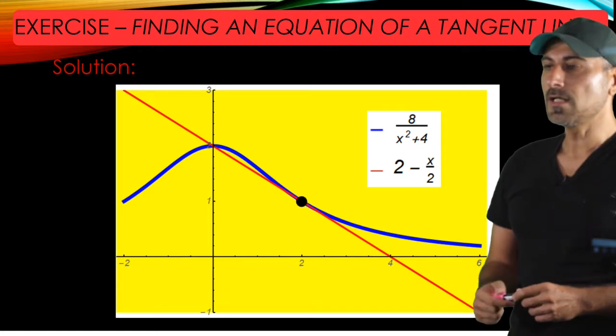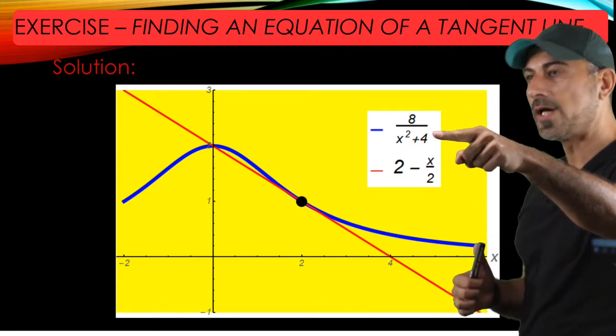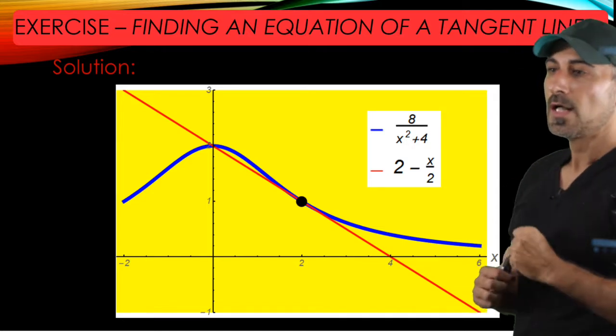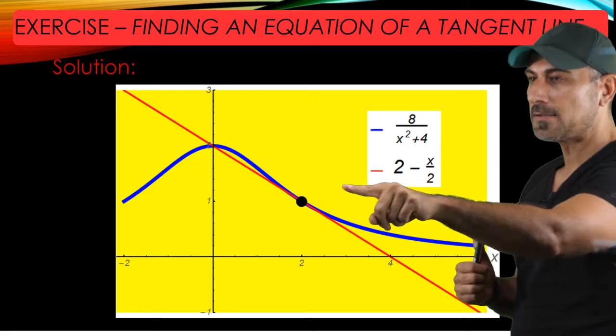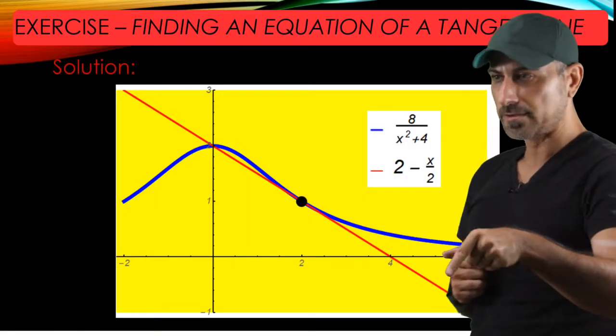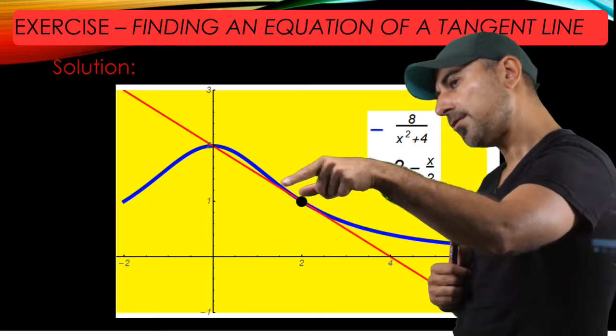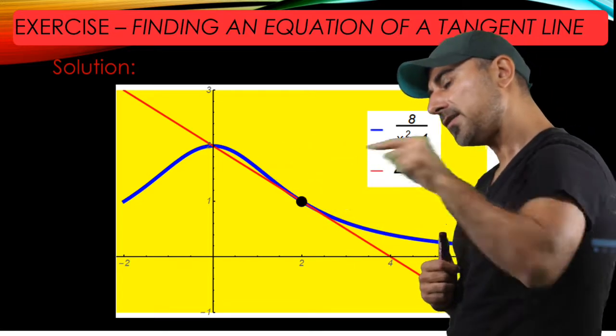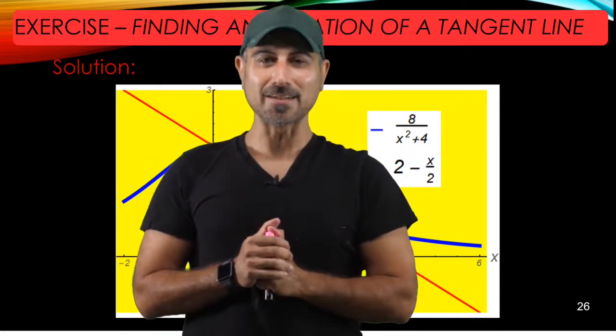Here is the graphical overview of the function 8/(x²+4) and the tangent line to the curve at point x equals 2. As seen from the graph, the red line is, in fact, the tangent line to the curve at point x equals 2. Well, thanks for watching. I'll see you in another video. Bye.